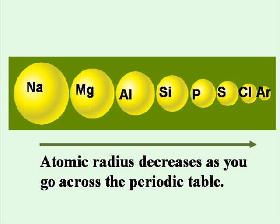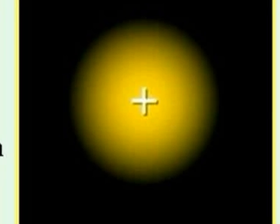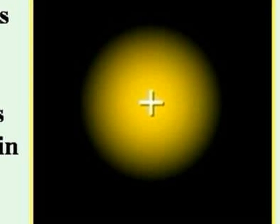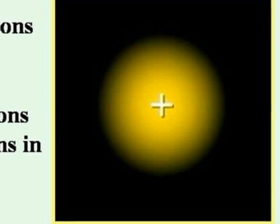The atomic radius decreases as you move across the periodic table because the number of protons is increasing while electrons are added to the same energy level. These electrons are not shielding each other, and as the number of protons in the nucleus increases, the additional protons pull the electrons in closer to the nucleus.